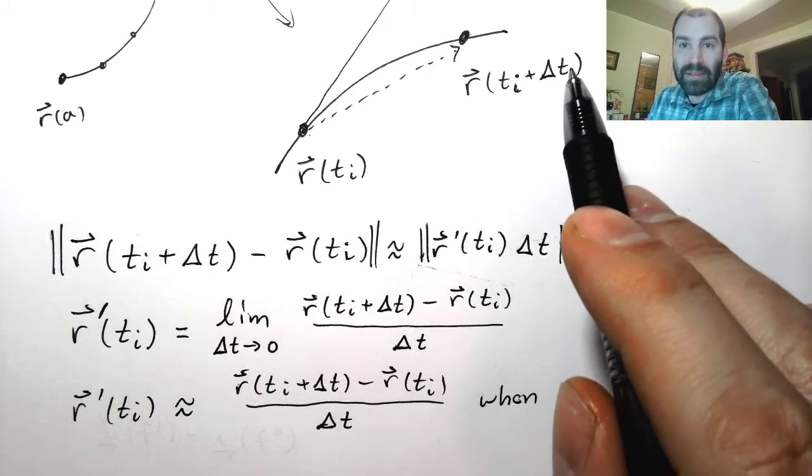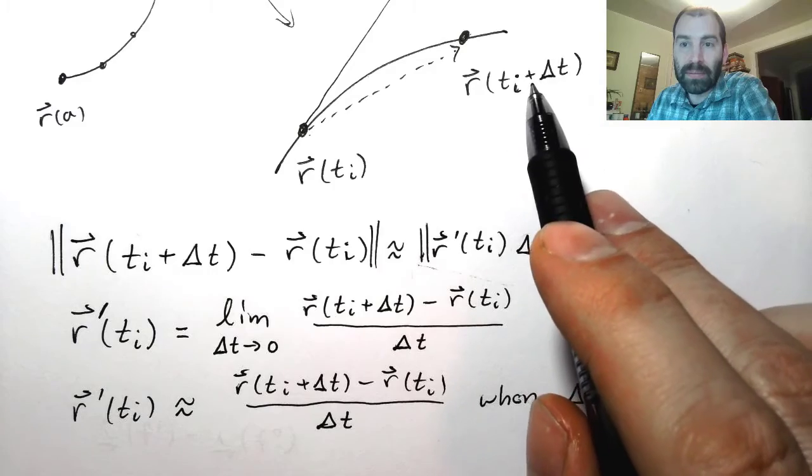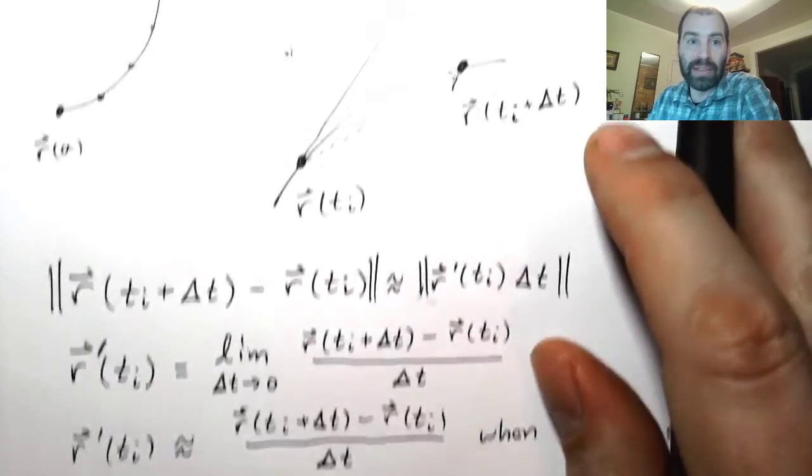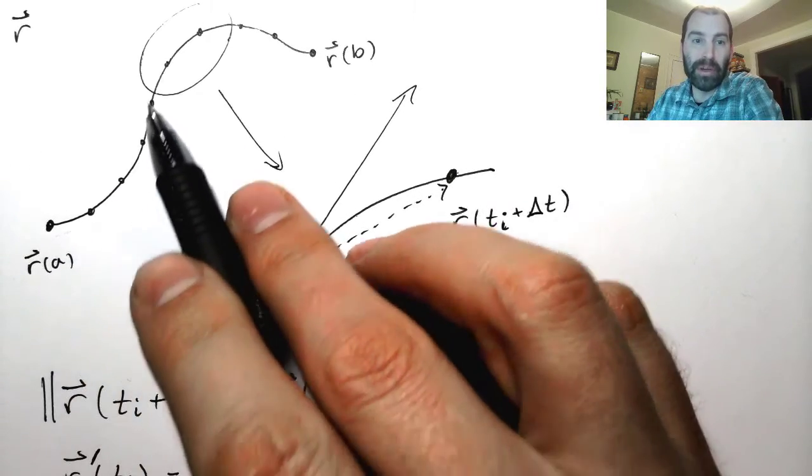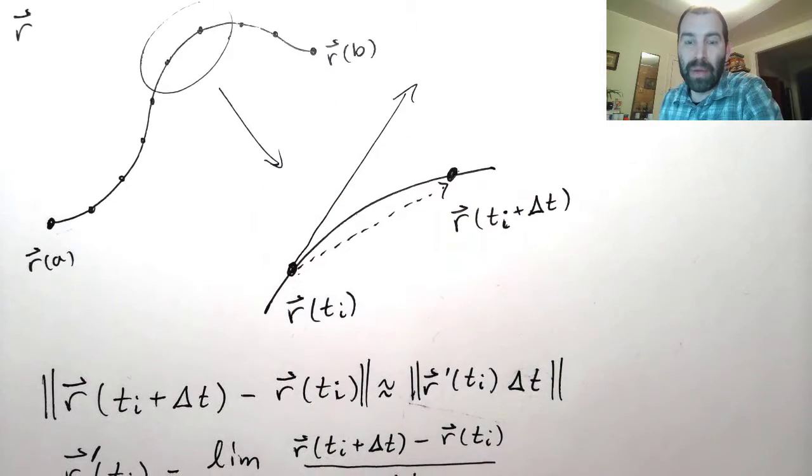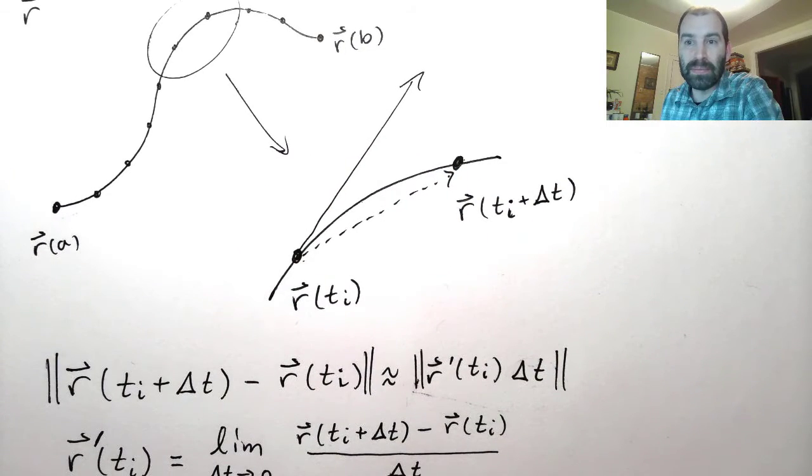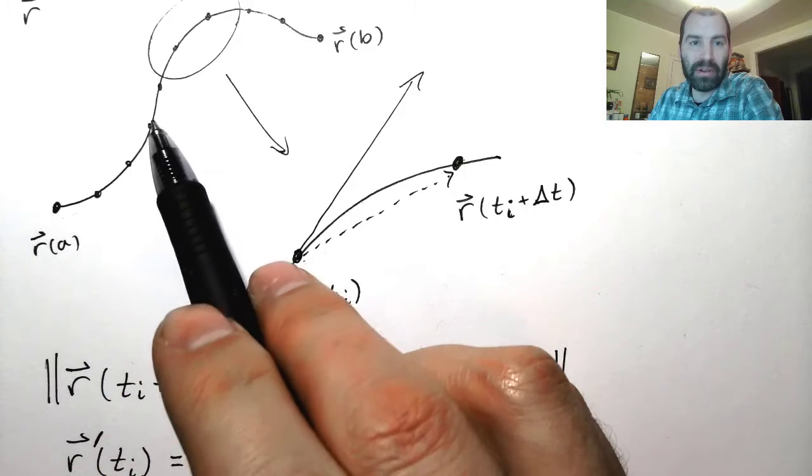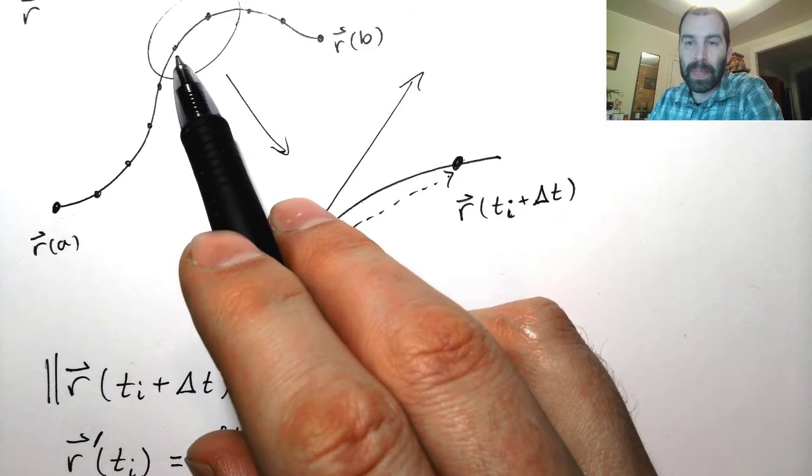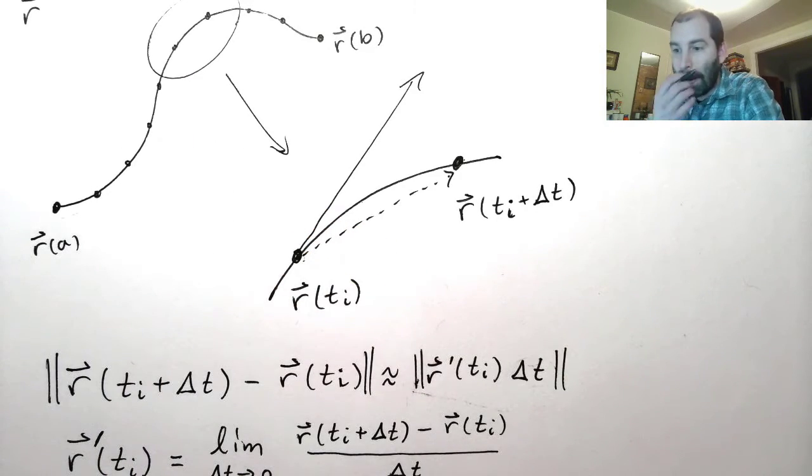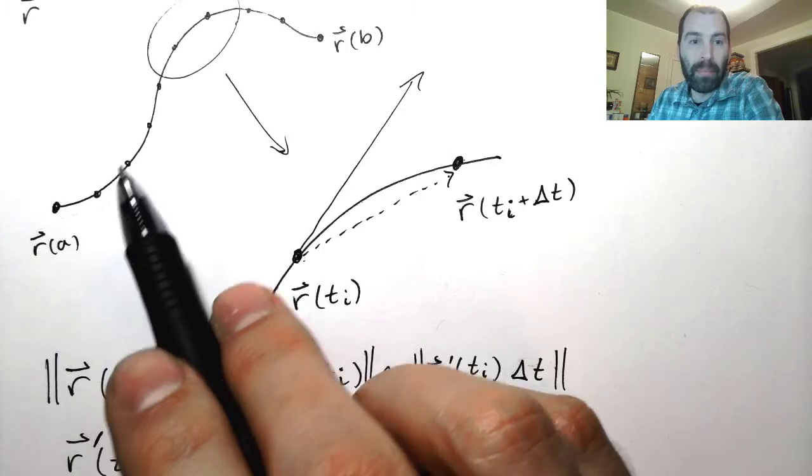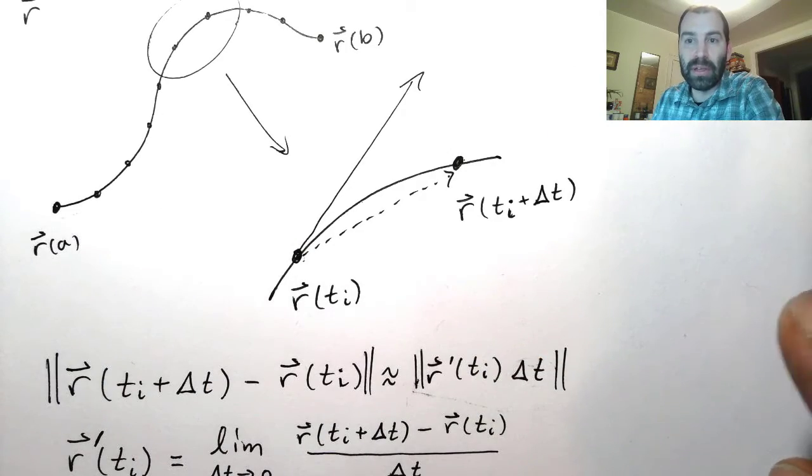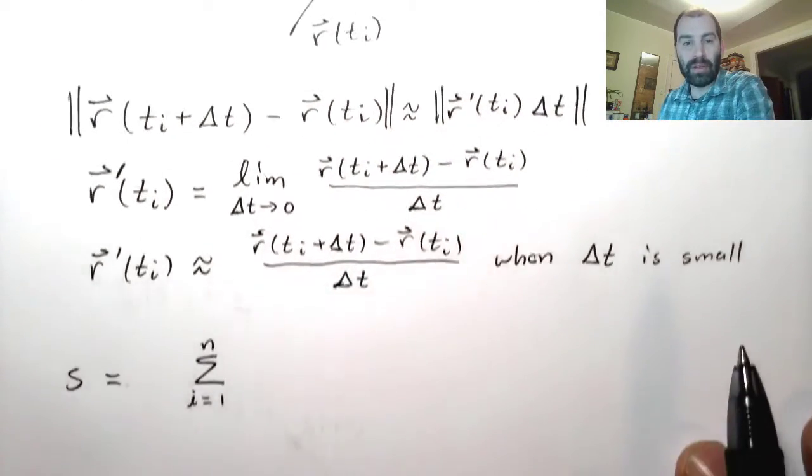So, as delta t approaches zero, and equivalently, as the points get more and more numerous, we get better and better approximations. So what we want to do is we want to add up all these little distances, and then take the limit as the distance between these little points goes to zero, or equivalently, as the number of points goes to infinity.